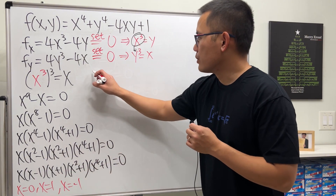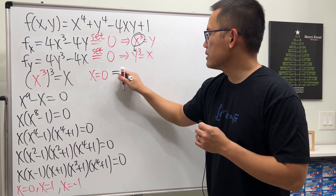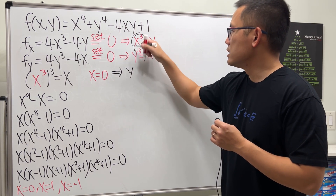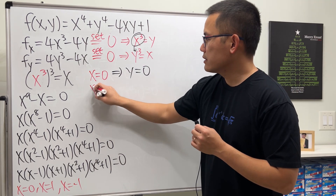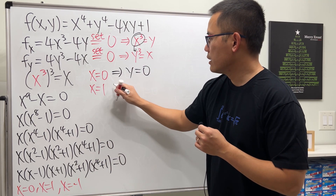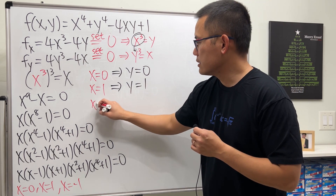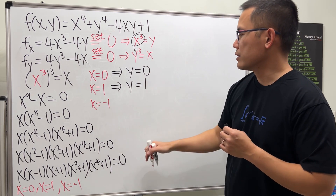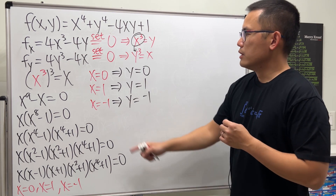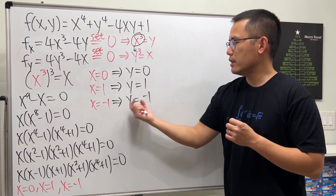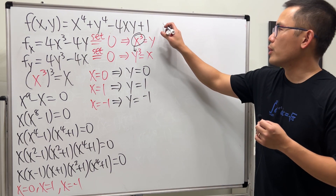We have three x values. When x = 0, y = 0³ = 0. When x = 1, y = 1. When x = −1, y = (−1)³ = −1. So our three critical points are (0, 0), (1, 1), and (−1, −1).